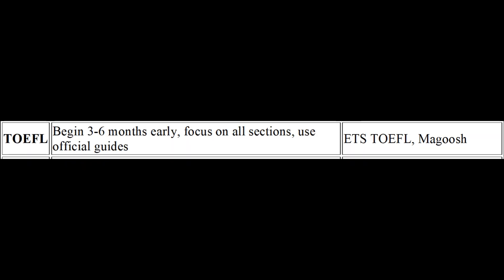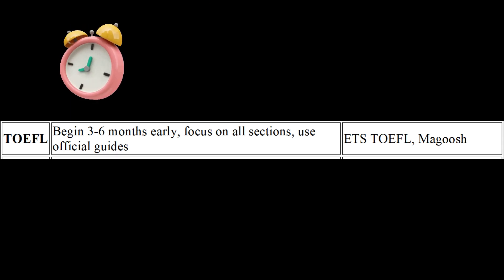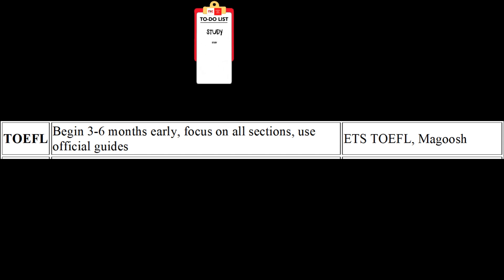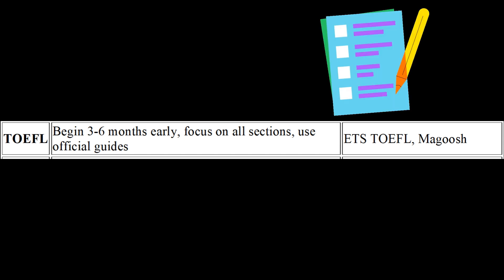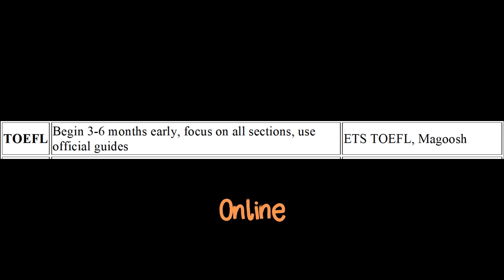TOEFL Preparation — Start Early: begin studying 3–6 months before your test date and develop a study schedule covering all sections. Use official study materials — books: The Official Guide to the TOEFL Test by ETS; online resources: ETS TOEFL website, Magoosh. Practice each section: focus on reading comprehension, listening skills, and academic writing. Practice speaking responses and get feedback. Take practice tests to simulate test conditions, build endurance, and improve time management.